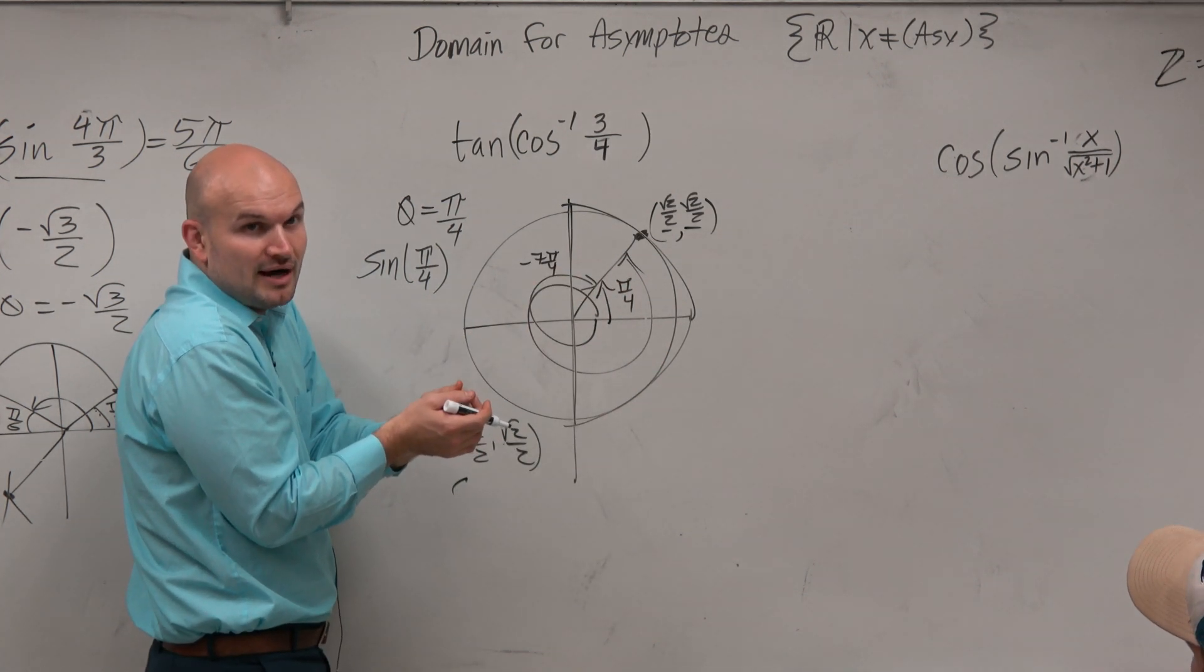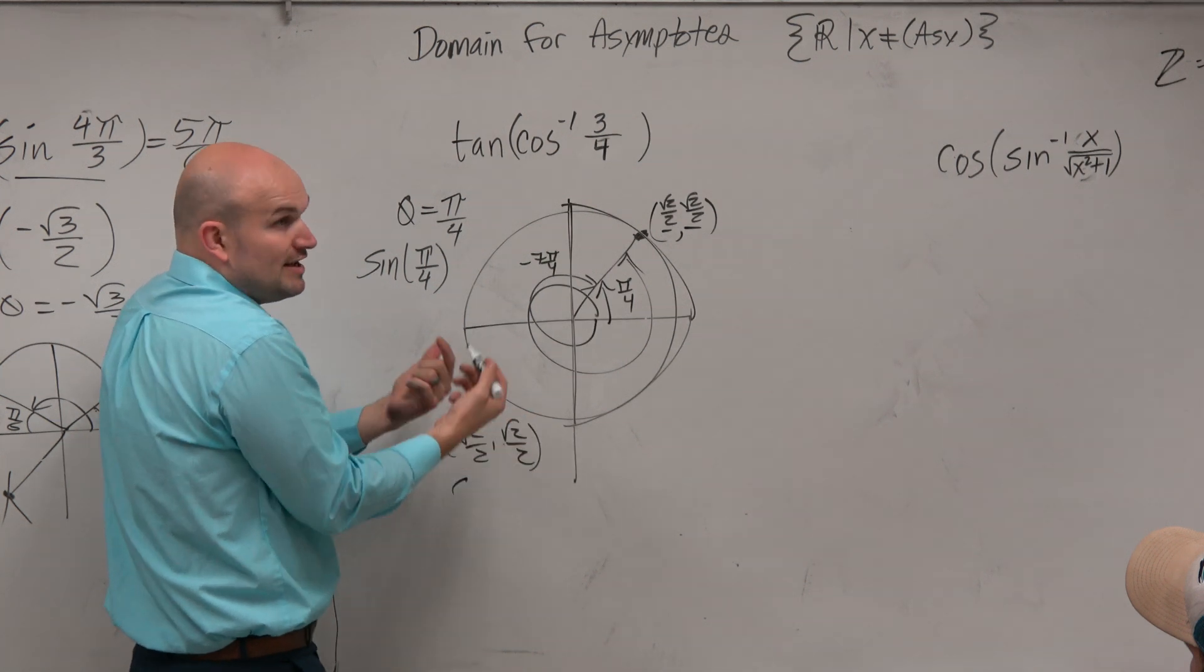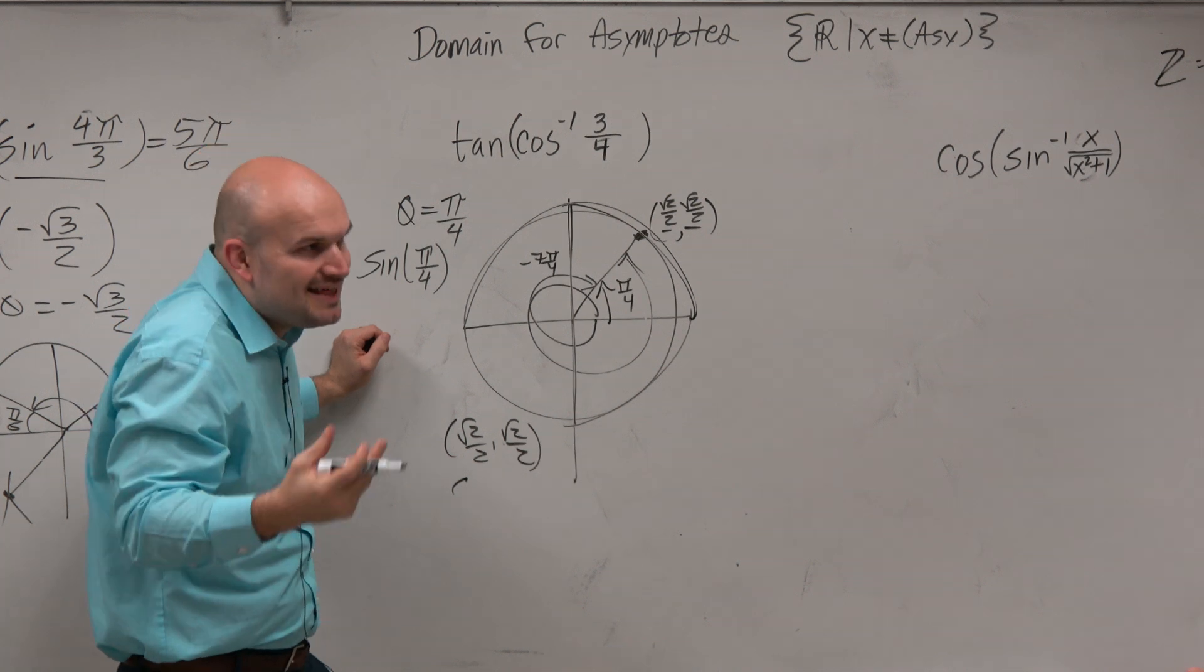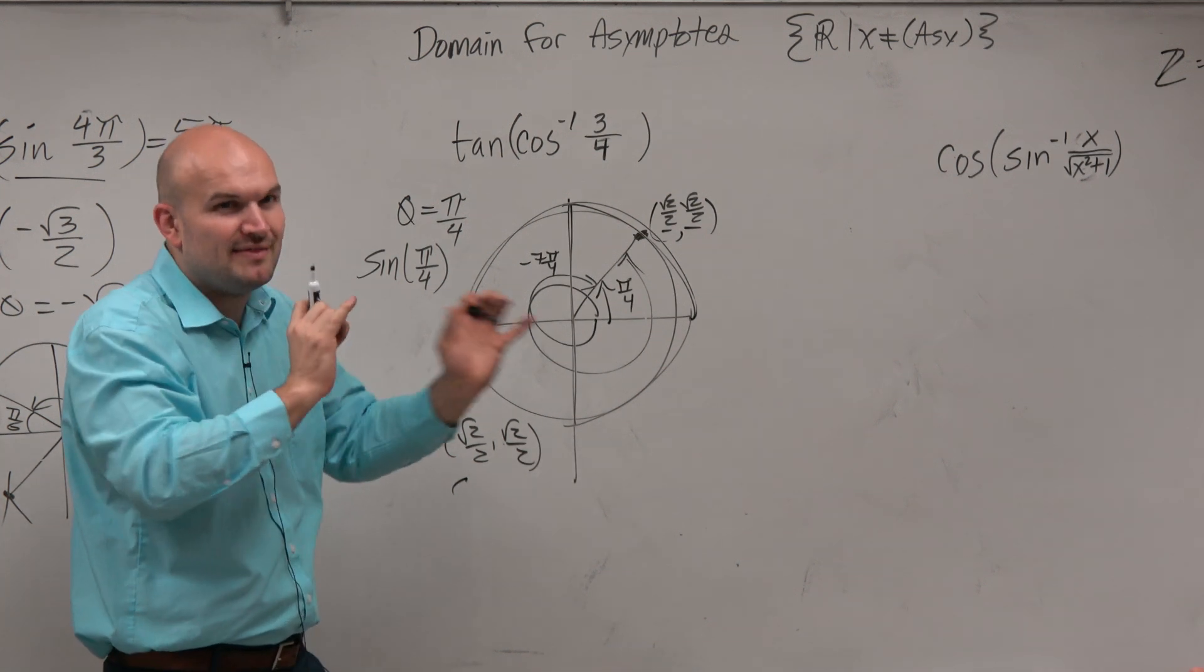And that's pi over 4 for the positive version. Or if this was cosine, and we were talking about the cosine, then it has to be in the first and the second quadrant. And again, that's going to give us only one angle. That's why that restriction works.